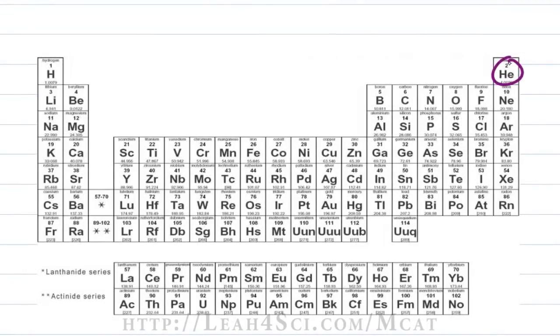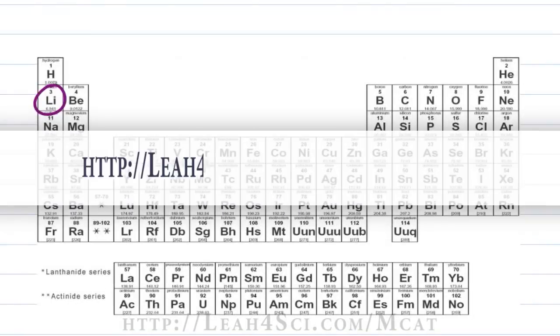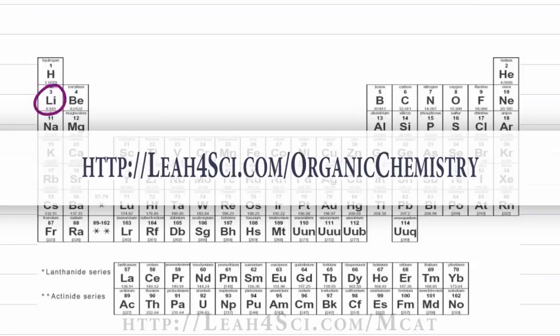So helium in terms of its electron configuration is just hydrogen plus an electron. Lithium is just helium plus an electron. If you're not comfortable with this, go back to my beginner organic chemistry videos where I break down electron configuration and this concept and you can find that on my website at leah4sci.com/organic chemistry.